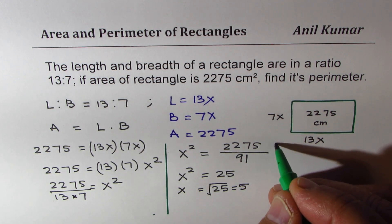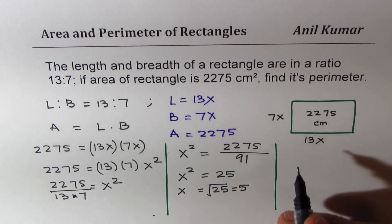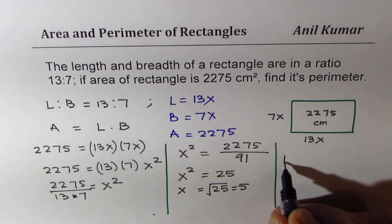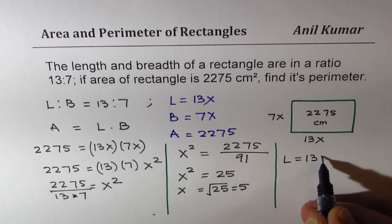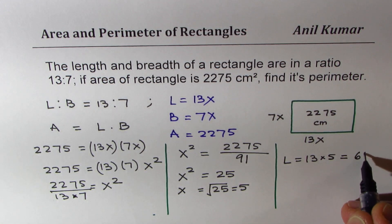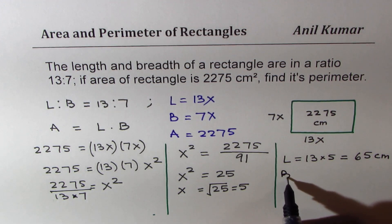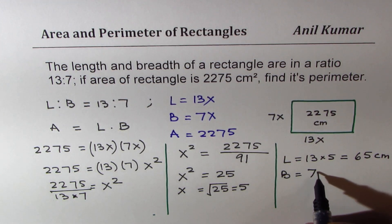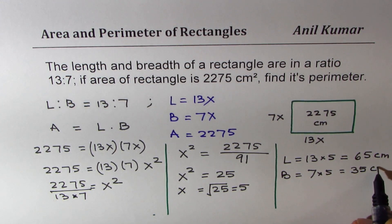So x is 5. Now can you write down the answer? I think it's clear. We have length equals to 13 times 5, which is 65 centimeters, and the breadth is 7 times 5, which is 35 centimeters.